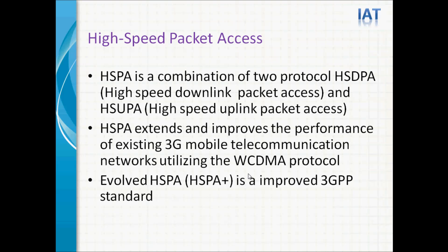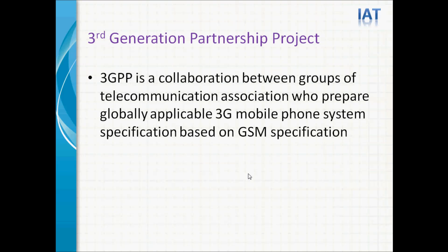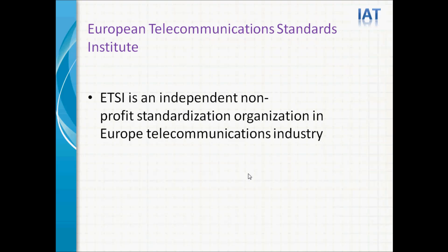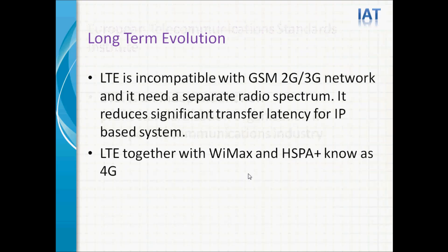3GPP — Third Generation Partnership Project — is a collaboration between groups of telecommunications associations that prepare globally applicable 3G mobile phone system specifications based on GSM specifications. ETSI — European Telecommunications Standards Institute — is an independent, non-profit standards organization in the European telecommunications industry. LTE — Long Term Evolution — is incompatible with GSM 2G and 3G networks and needs a separate radio spectrum. It reduces significant transfer latency for IP-based systems. LTE, together with WiMAX and HSPA, is known as 4G.